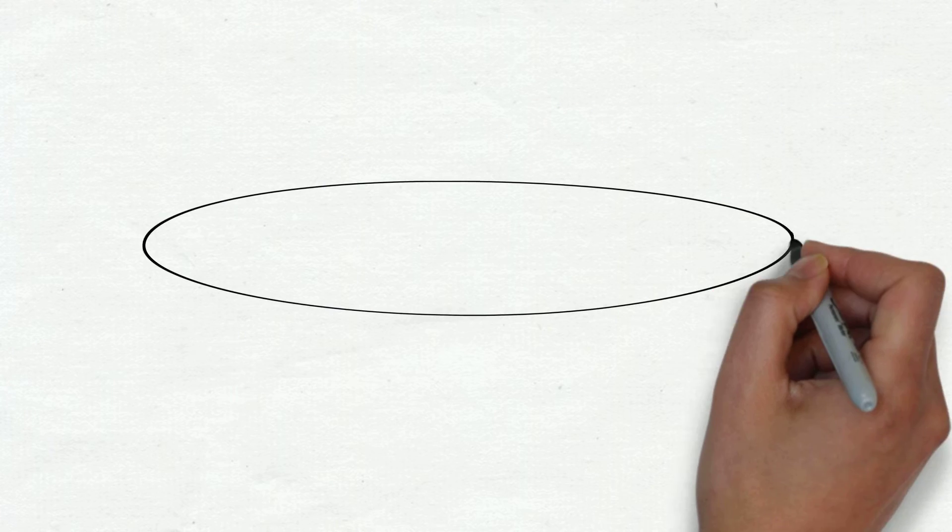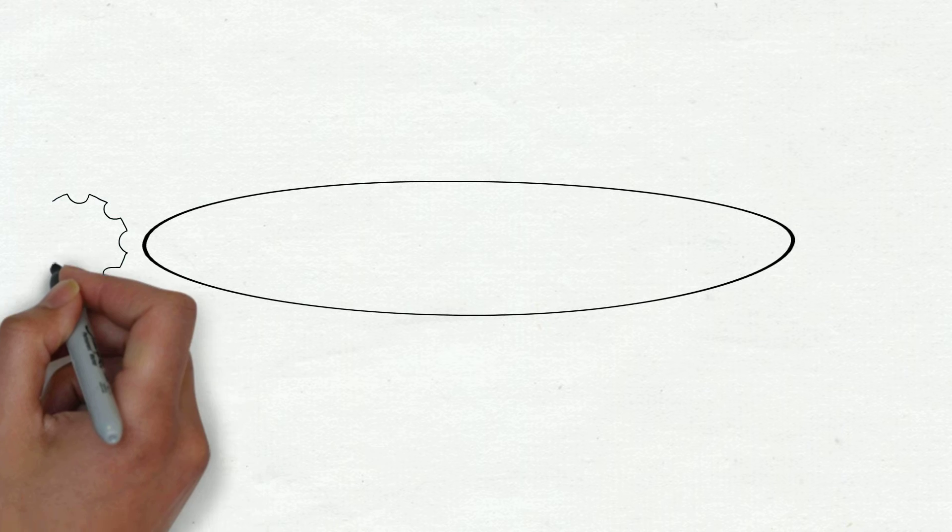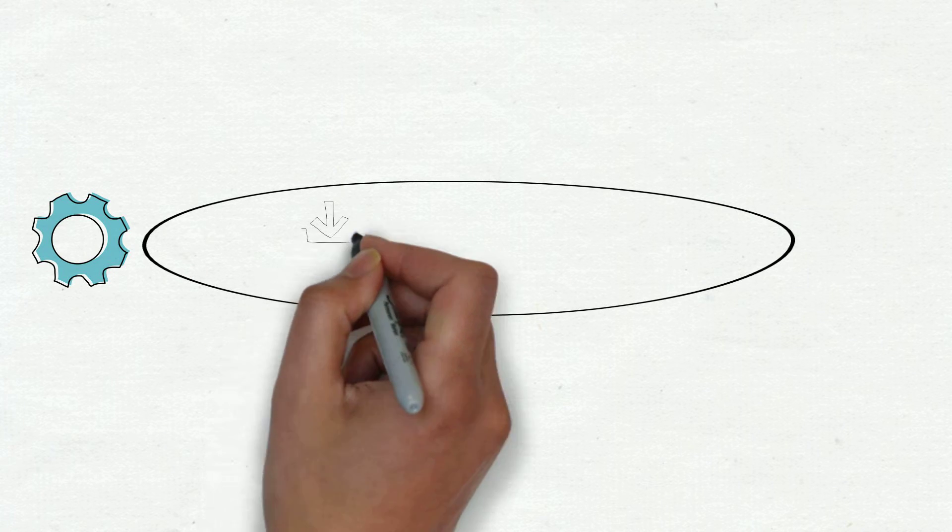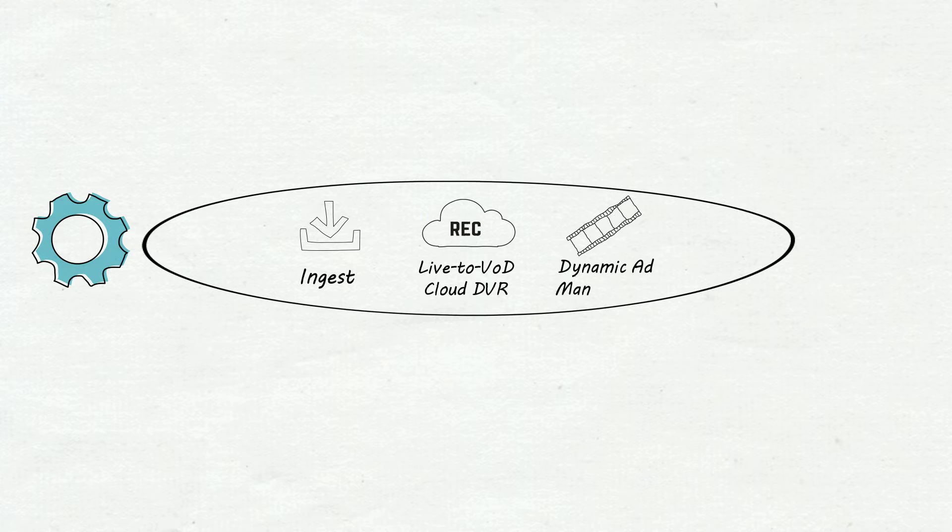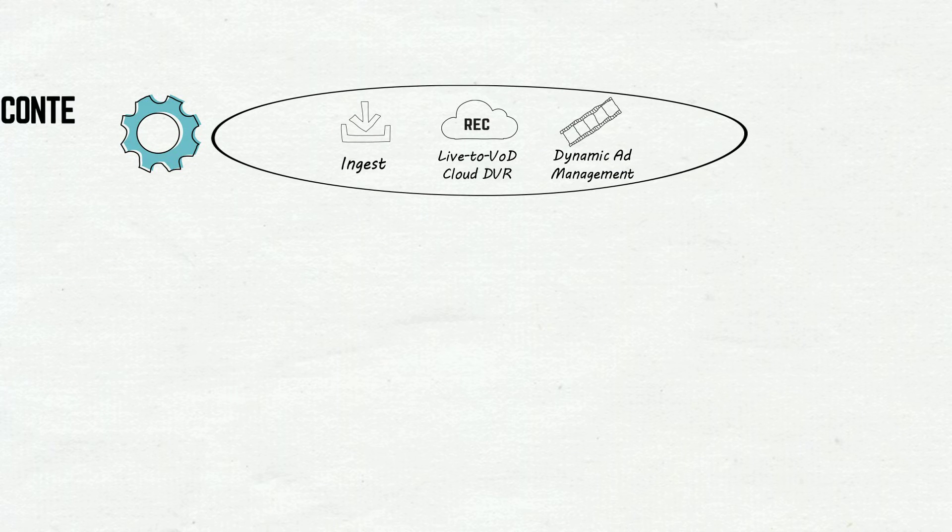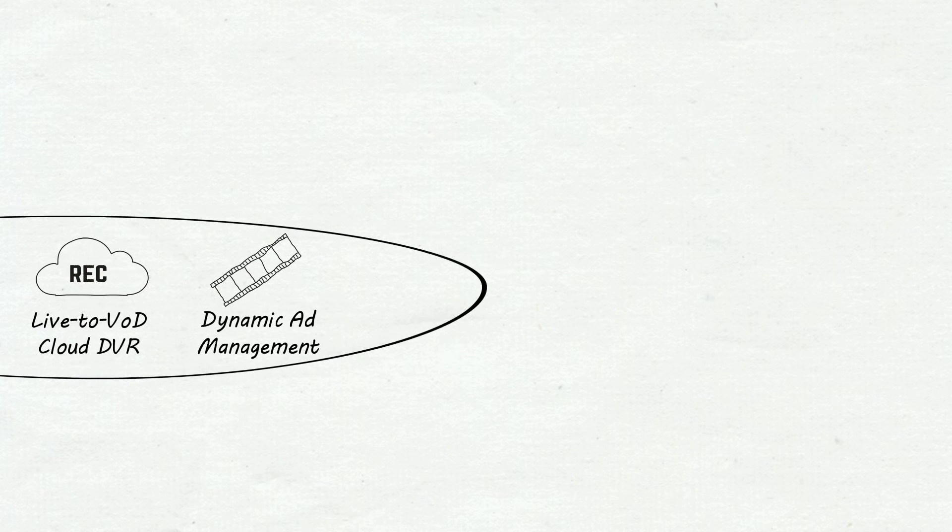We do this by optimizing each part of your TV delivery in different ways. To create your library of TV content you'll need ingest, live to VOD and cloud DVR functions. They're provided by dedicated content creation software that manages all of the common video assets you need to create the final viewing stream.